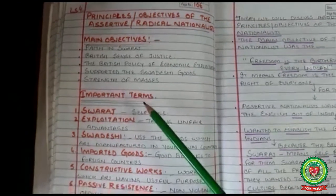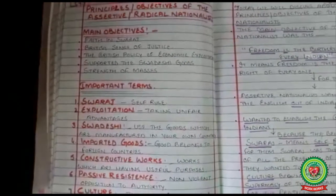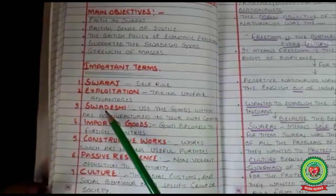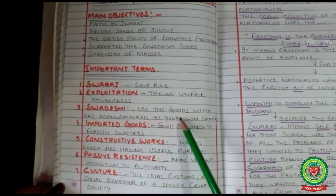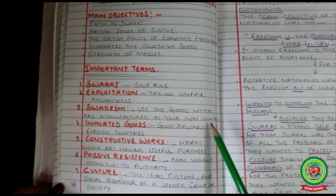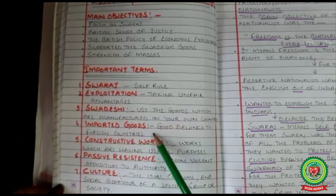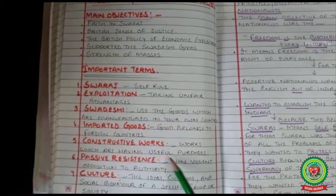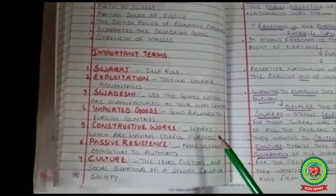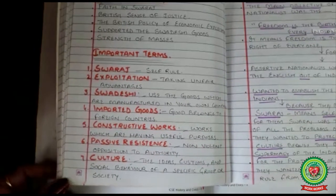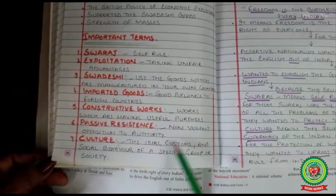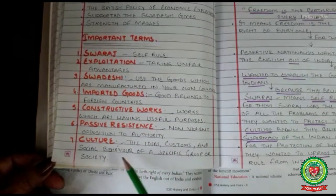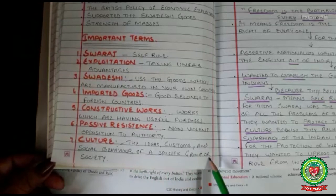Before the discussion, we must know the following terms: Swaraj means self-rule; exploitation means taking unfair advantages; Swadeshi means use of goods which are manufactured in your own country; imported goods are goods belonging to foreign countries; constructive works are works which have useful purposes; and passive resistance means nonviolent opposition to authority.